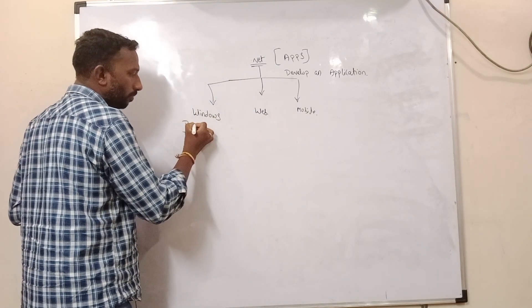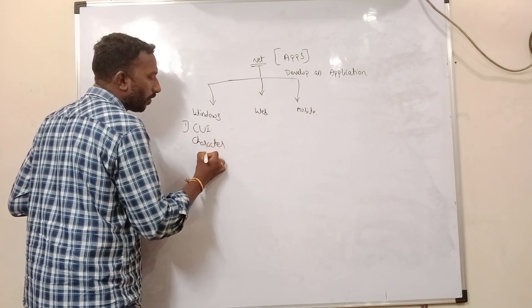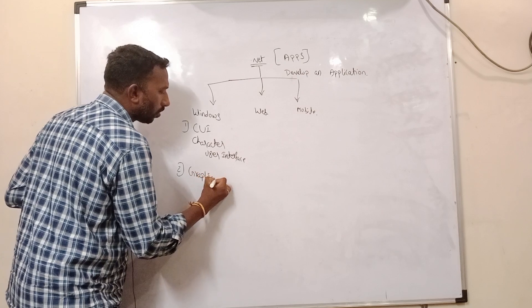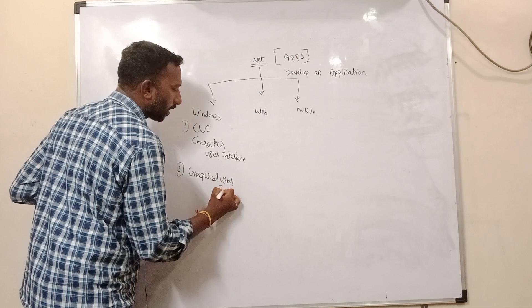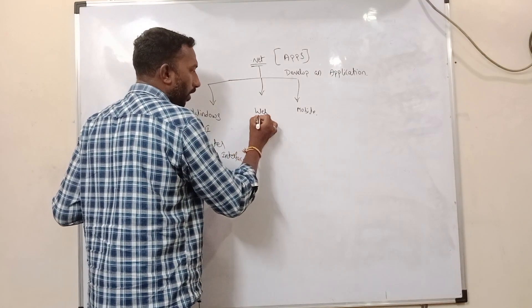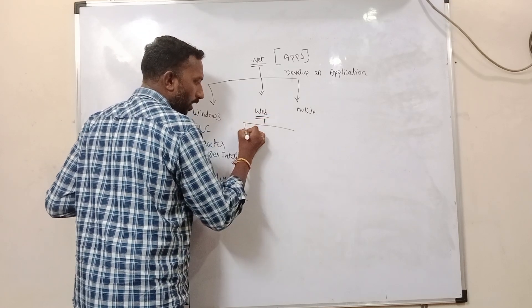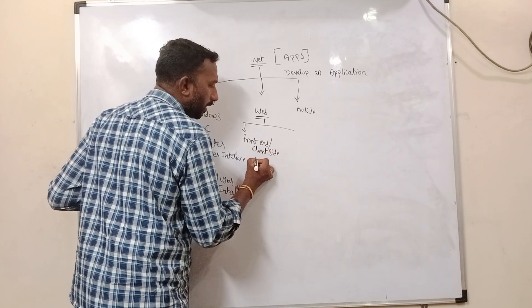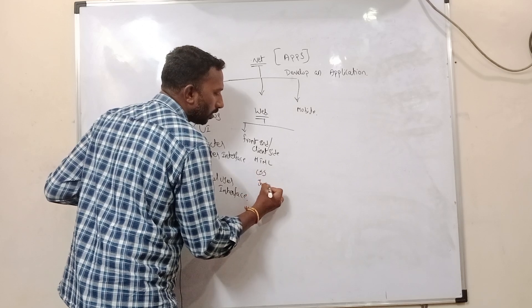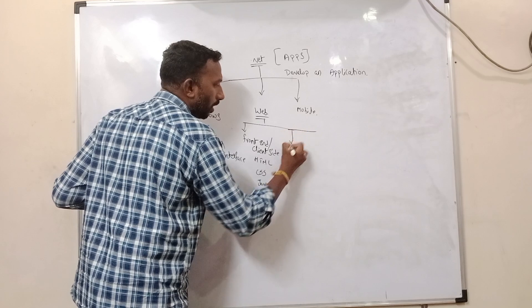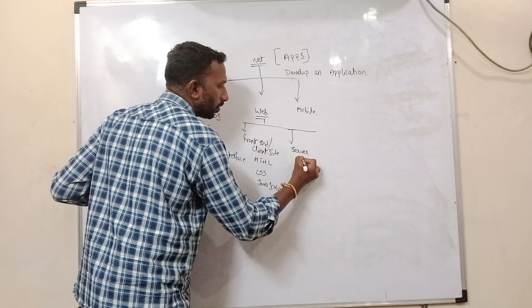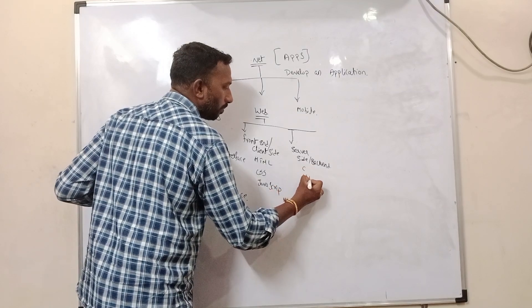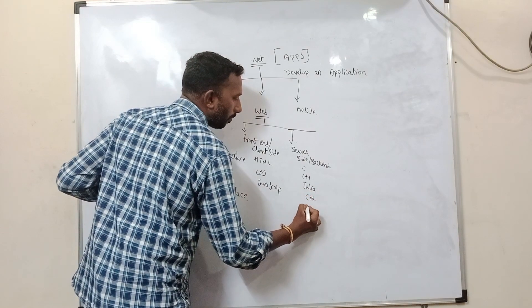When we talk about Windows applications, there are two types: Character User Interface (CUI) and Graphical User Interface (GUI). We develop console applications as well as Windows Forms applications. When developing a Windows Forms application, we use GUI. For web applications, we have a front-end, also called client-side, which includes HTML, CSS, and JavaScript.